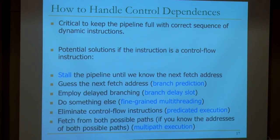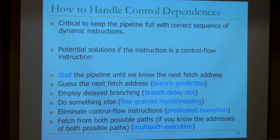You could eliminate control flow instructions through predicated execution — converting control dependences to data dependences. Another option is to fetch from multiple paths and discard one: when you encounter a branch, fetch from both paths simultaneously, then discard the incorrect path when the branch resolves. This is multi-path execution and requires more hardware, but people have actually worked on this.